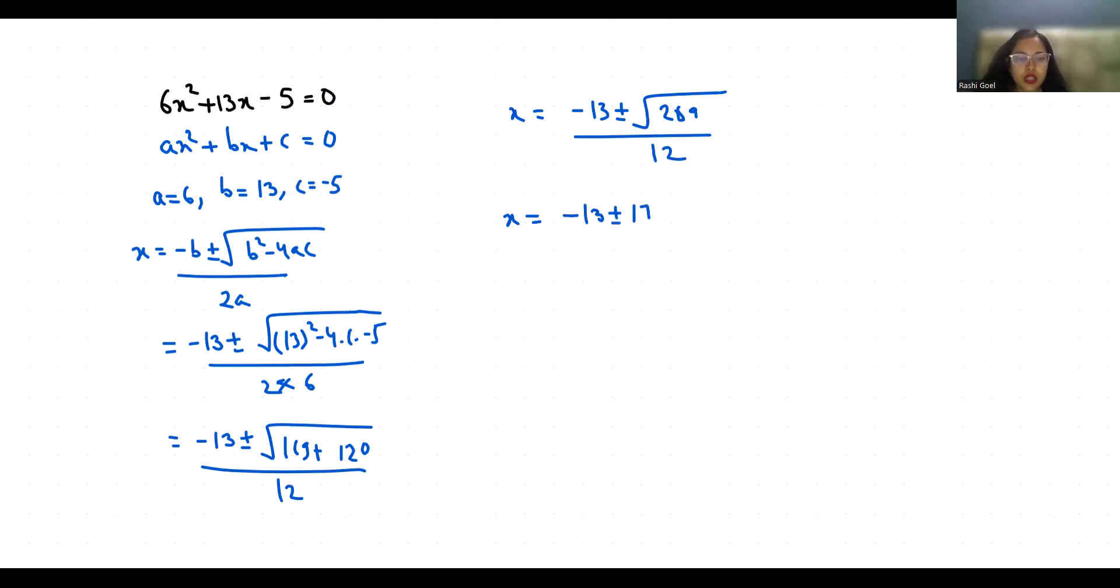So x1 is minus 13 minus 17 by 12, and x2 is minus 13 plus 17 by 12. So x1 is minus 13 minus 17 is minus 30 by 12. When we divide both numerator and denominator by 6, we get minus 5 by 2.